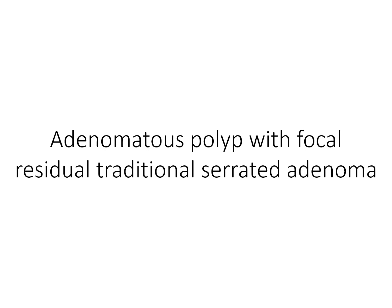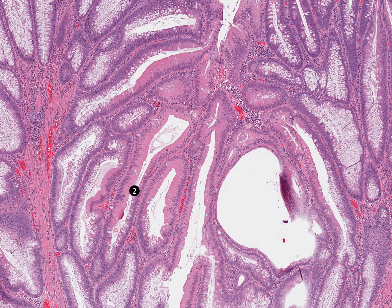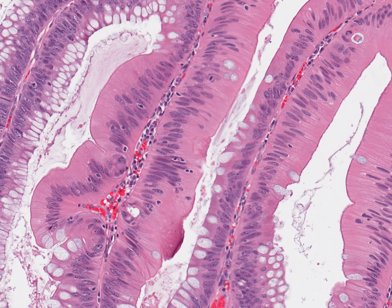This polypoid distal colonic polyp looks like a conventional tubulovillous adenoma, but careful examination at higher magnification shows rare gland profiles that are partially composed of cells with typical adenoma morphology and cells with residual traditional serrated adenoma, having abundant, densely eosinophilic cytoplasm with minimal nuclear atypia and pseudostratification.